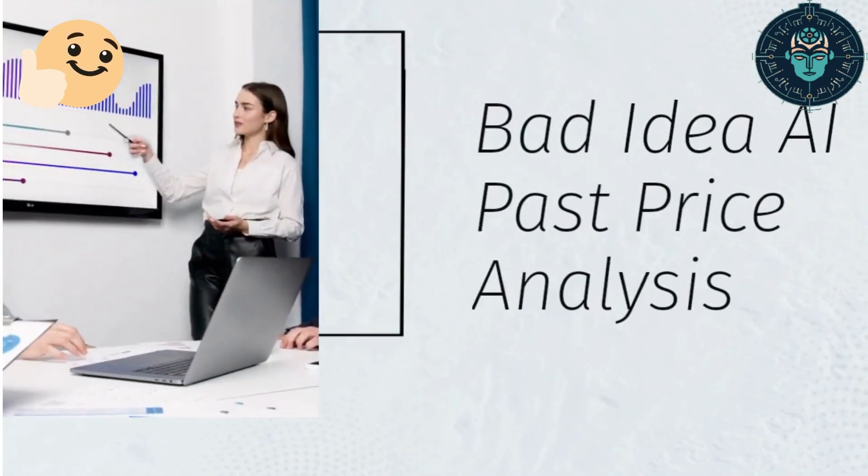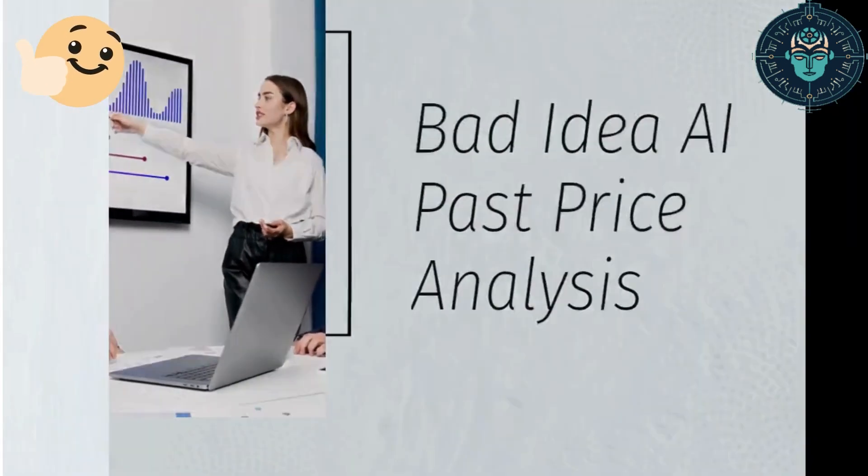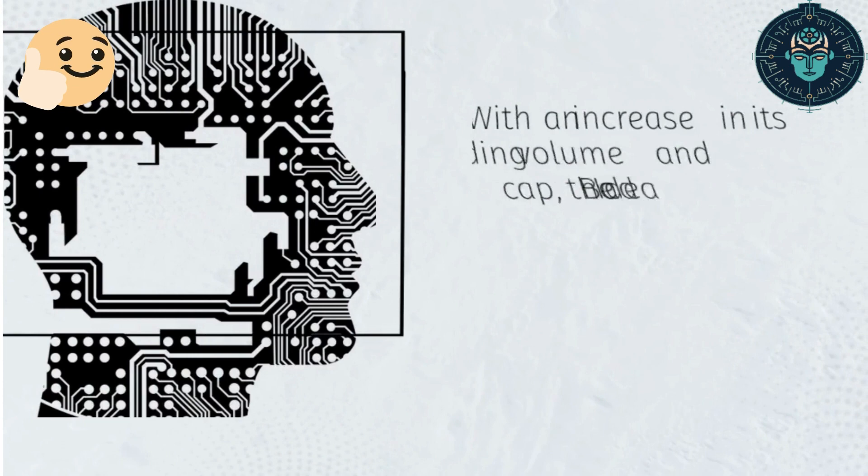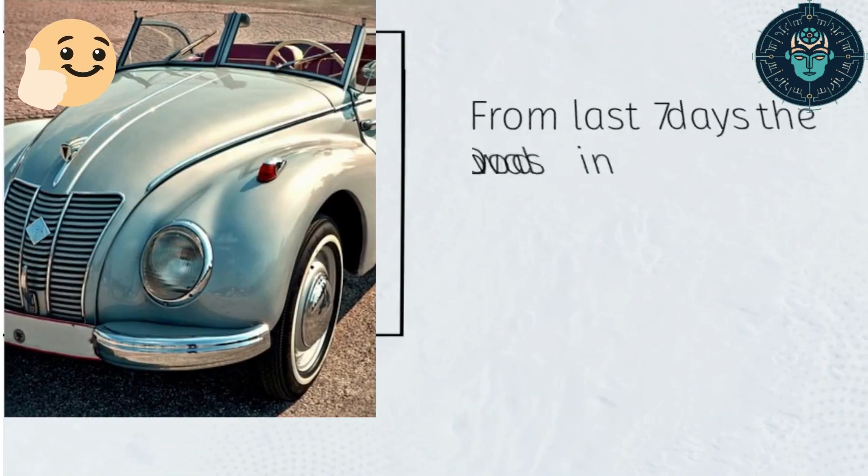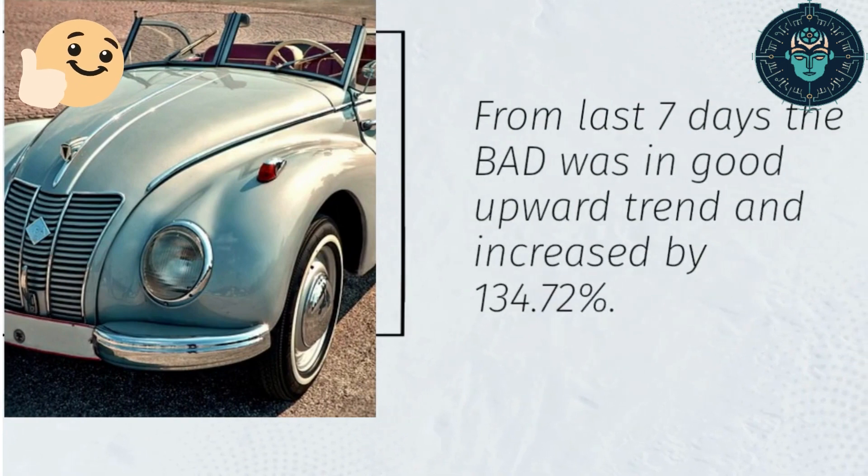Bad Idea AI Past Price Analysis. With an increase in its trading volume and market cap, the Bad Idea AI's price has shown a good increase of 30.78% in the last 24 hours. From last 7 days Bad was in good upward trend and increased by 134.72%.